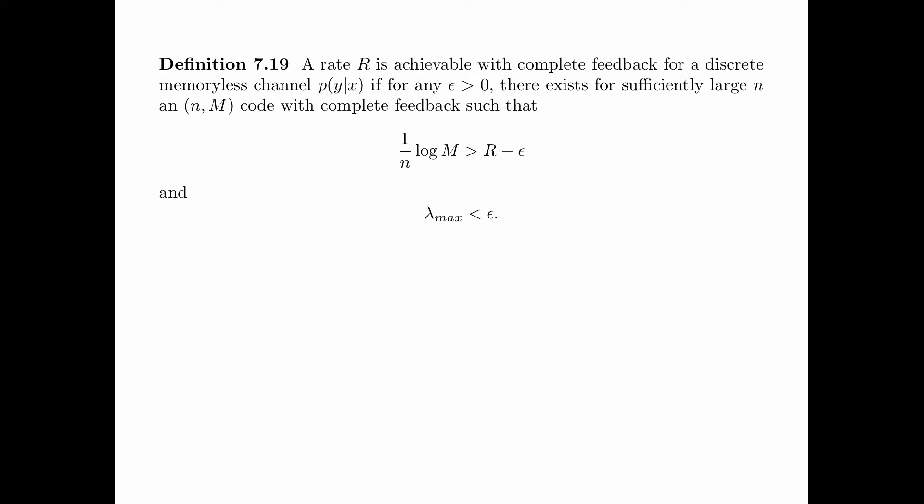Definition 7.19 is the definition of a rate R being achievable with complete feedback. A rate R is achievable with complete feedback for a discrete memoryless channel P(Y|X) if for any epsilon greater than 0, there exists for sufficiently large n, an (n,M) code with complete feedback such that (1/n)log M, that is the rate of the code, is at least R minus epsilon, and at the same time, the maximal conditional probability of error is less than epsilon.